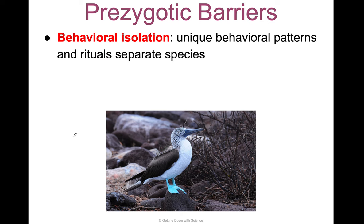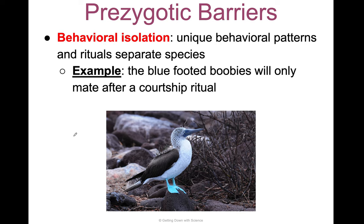Behavioral isolation involves unique behavioral patterns and rituals for separate species. A great example is blue-footed boobies — they will only mate after a courtship ritual. They have to behave in a certain way in order to mate and pass on their genes. If another type of bird doesn't have that same ritual, the blue-footed booby is not going to mate with them.